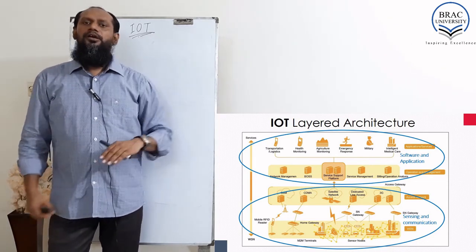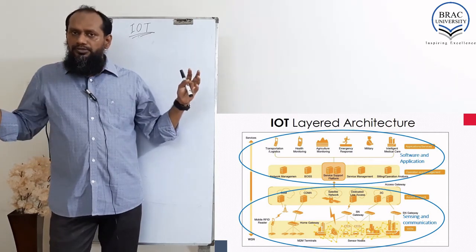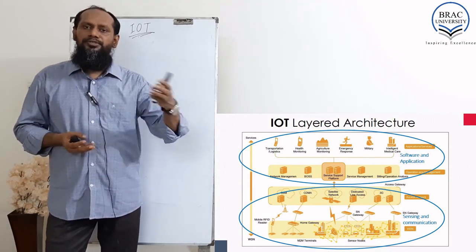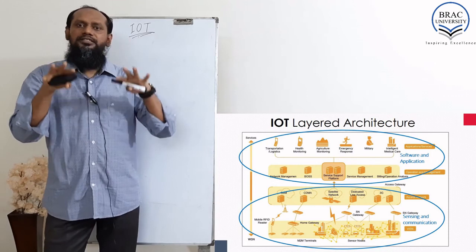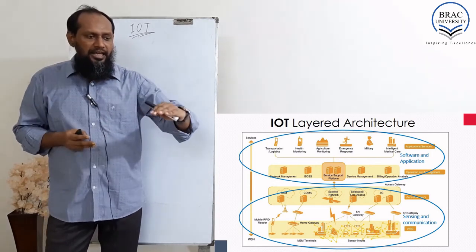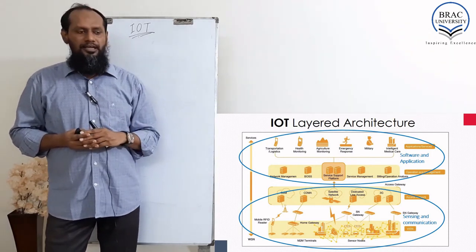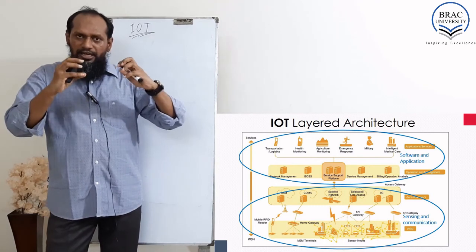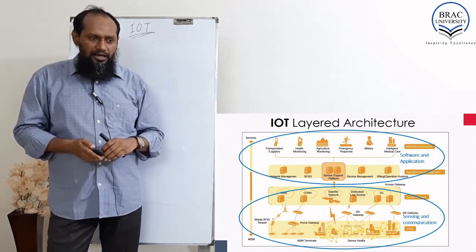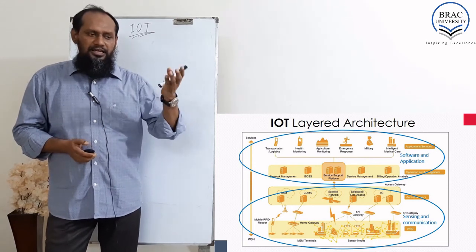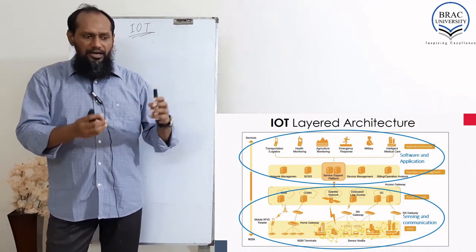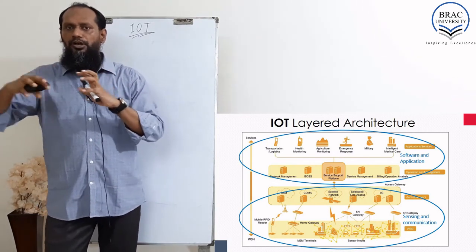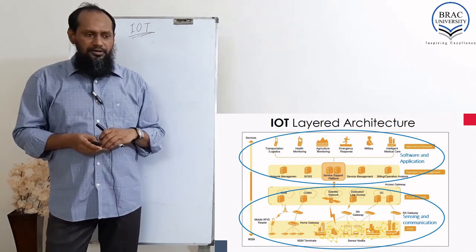The bottom layer is where we are getting the information from the environment or surroundings by using some sensors. First we should have a sensor network and then some communication medium. After sensing, it uses a sensor node or static sync node, where data coming from a number of sensors is collected at a sync node.